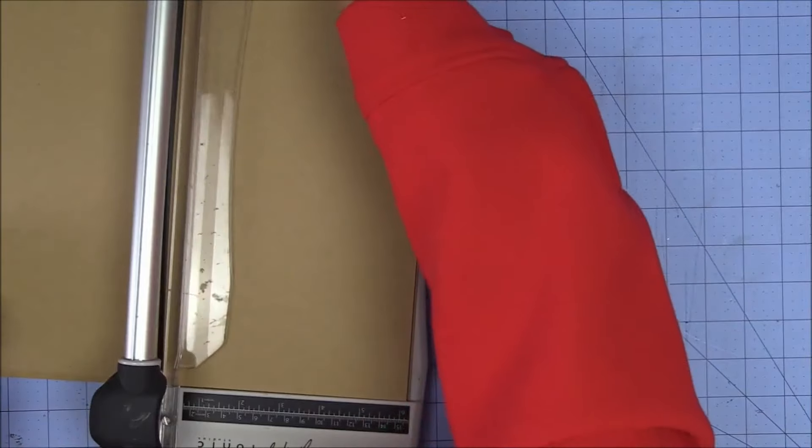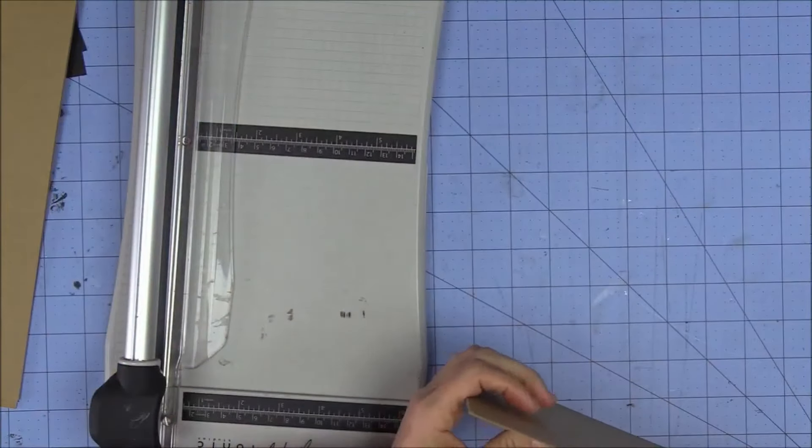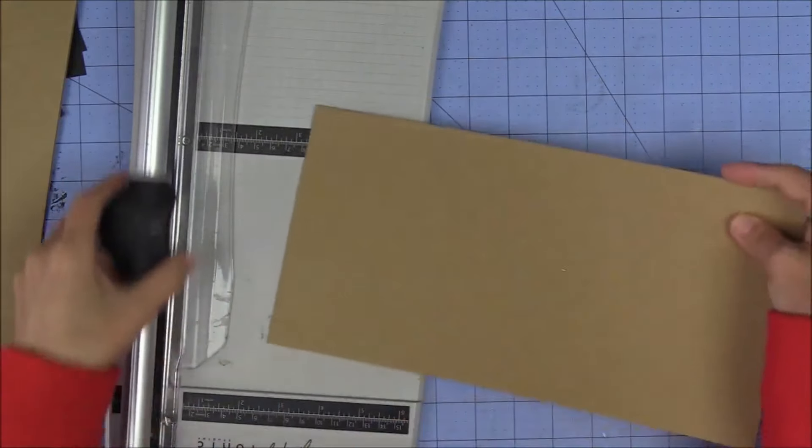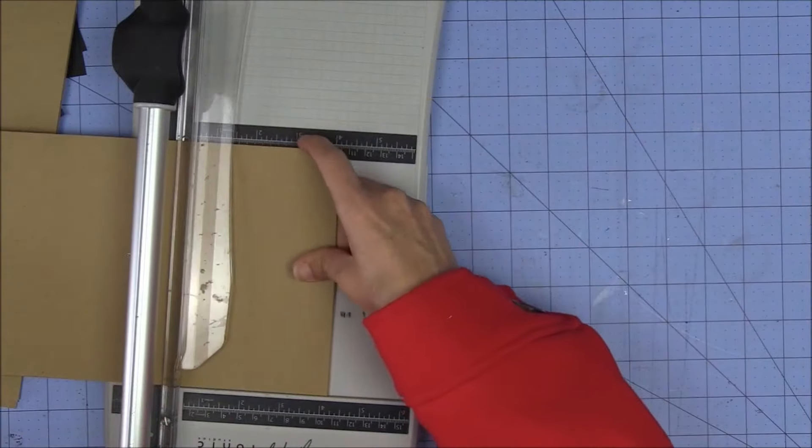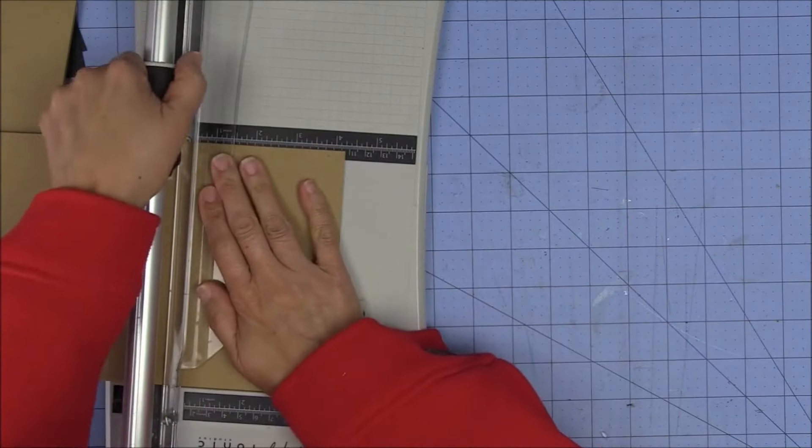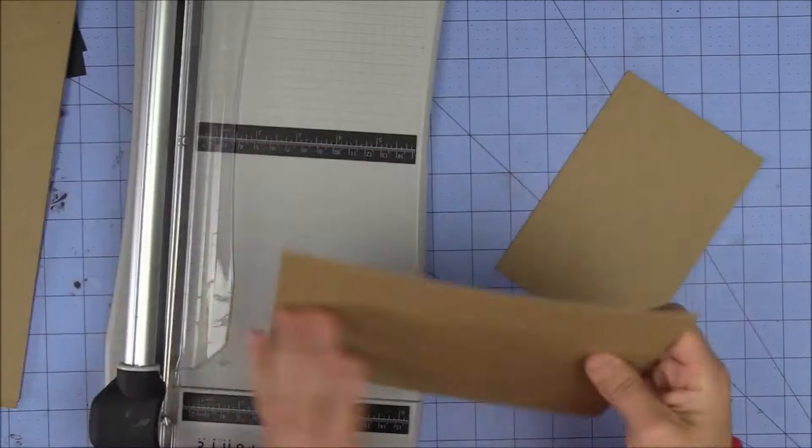And let me tell you, this Tim Holtz trimmer is no joke. It'll cut like it's nobody's business. Do I want to struggle like that? I really don't. So I'm taking another sheet out. But did you see that? Four sheets of 100 pound cardstock, guys. But three sheets is just easier for me. I don't want to go through that struggle.